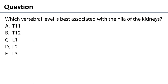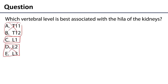The assessment question is: which vertebral level is best associated with the hyla of the kidneys? T11 and T12 are usually associated with the superior poles; L2 and L3 are usually associated with the inferior poles. L1 is best typically associated with the hyla of the kidneys. Thank you very much for your time.